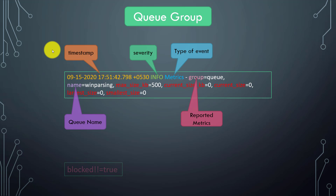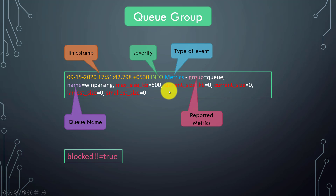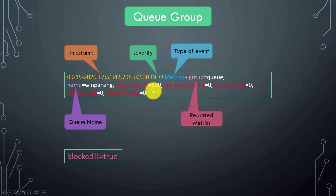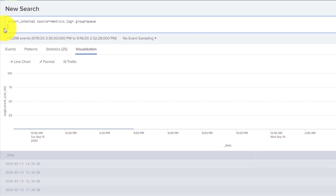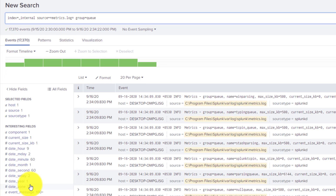Sometimes you will also see blocked=true in these logs. That means a particular queue — say parsingQueue — cannot accept any more items; it is full. In a busy production scenario you may occasionally see blocked=true, but if you are continuously getting blocked=true, something is wrong with that queue and you need to analyze that situation.